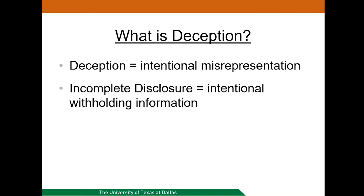First let's talk about what deception is. Deception occurs when one or more elements of the research study is intentionally misrepresented or disguised by providing participants with misleading or false information. An example of this is an anxiety study where participants are told to expect mild pain during the course of the experimental session, however no painful procedures are administered.